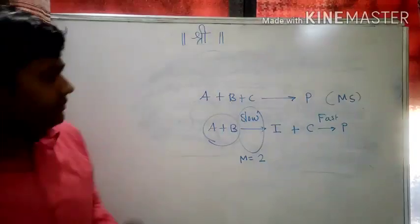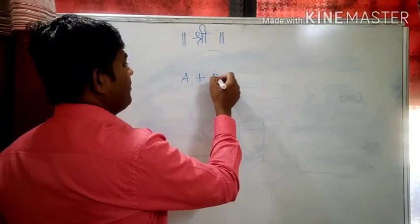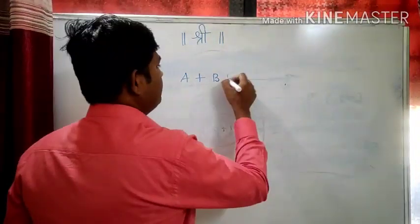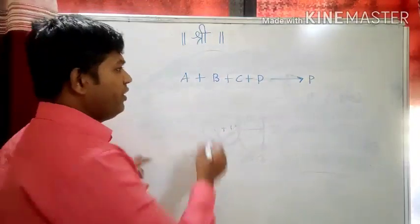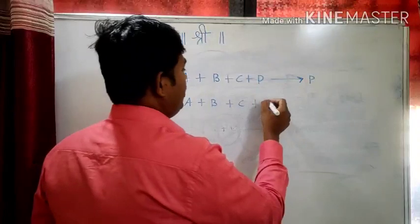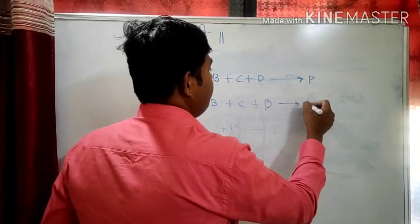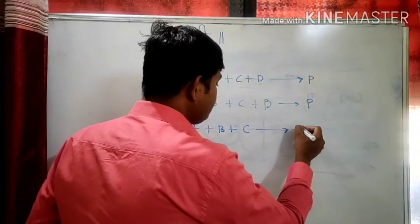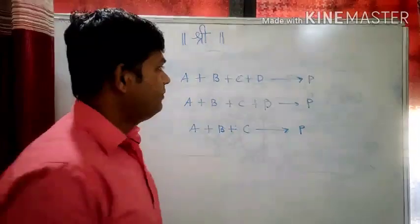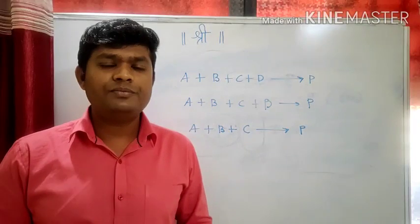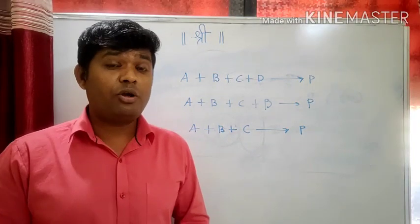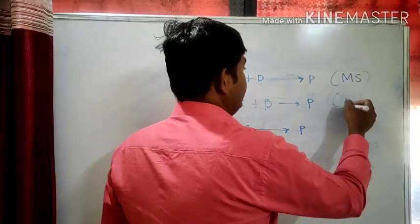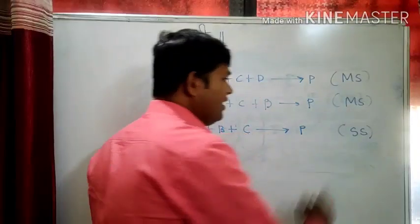Let us take two more examples. A plus B plus C plus D gives product P — reaction five. A plus B plus C plus D gives product P — reaction six. And A plus B plus C gives product P — reaction seven. Now see these three reactions. Can you guess the molecularity? Again you have to predict which is single step and which is multi-step. Assume reaction five is multi-step, reaction six is multi-step, and reaction seven is a single step reaction.